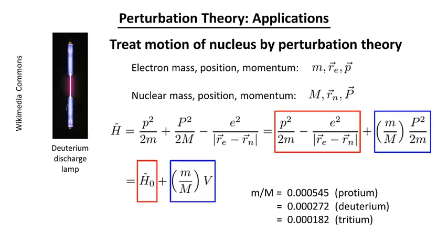So let's start. We have the electronic coordinates, the mass, the position, the momentum, designated thusly. The same for the nucleus, mass capital M and its own position. It's a two-particle system. The Hamiltonian consists of the electron kinetic energy, the nuclear kinetic energy, and then the interaction potential.